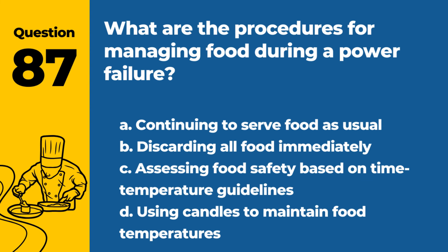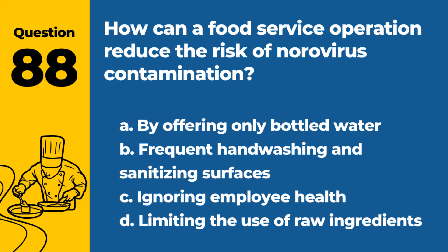Question 87. What are the procedures for managing food during a power failure? a. Continuing to serve food as usual. b. Discarding all food immediately. c. Assessing food safety based on time-temperature guidelines. d. Using candles to maintain food temperatures. Answer: c. Assessing food safety based on time-temperature guidelines. This helps determine which foods are safe to keep.